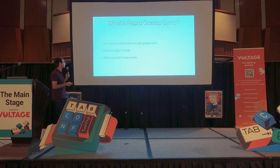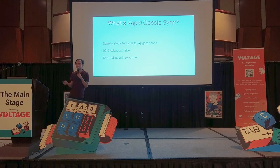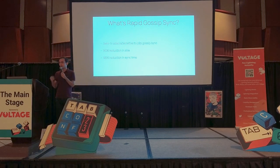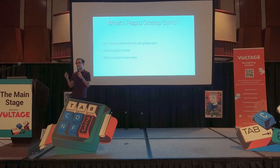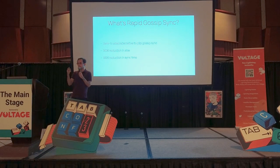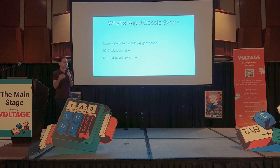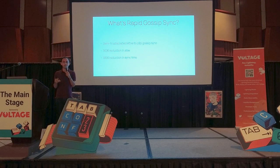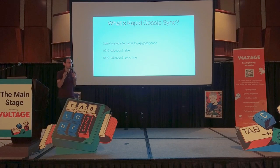So that is why we decided to build Rapid Gossip Sync. Rapid Gossip Sync is a semi-trusted alternative to peer-to-peer gossip. Why is it semi-trusted? Well, you can run your own Rapid Gossip Sync server if you so chose. Because of that, we decided to make some trade-offs such as getting rid of the signatures. If you don't verify the signatures, what you're exposing yourself to in terms of gossip is DOS attack vectors, but you're not really exposing yourself to loss of funds.